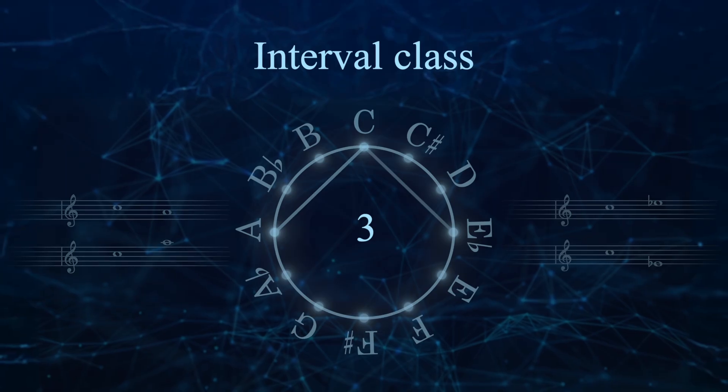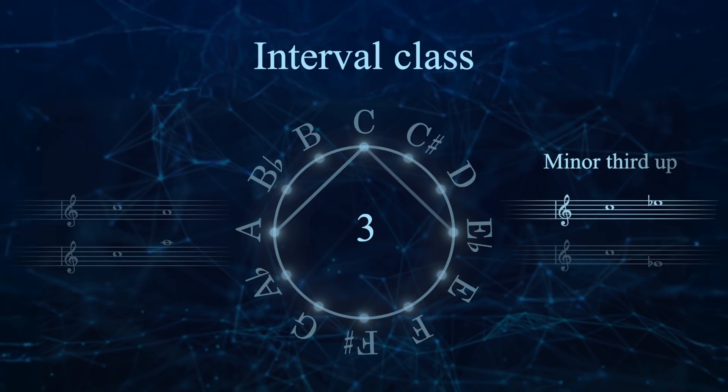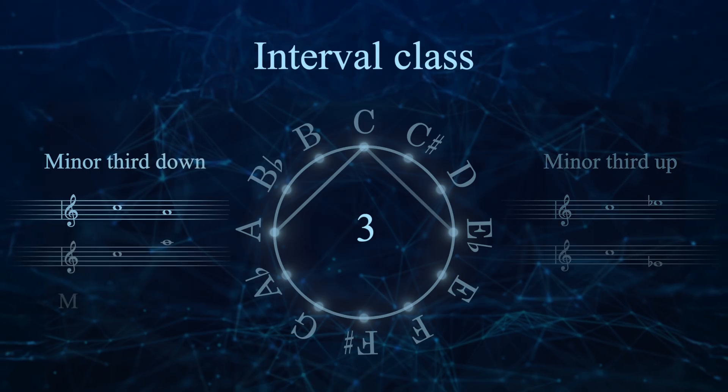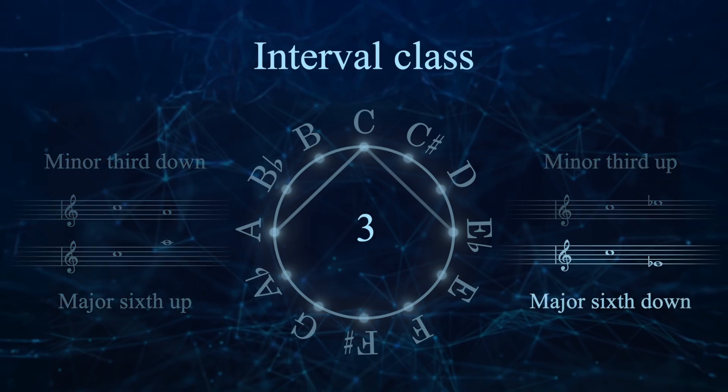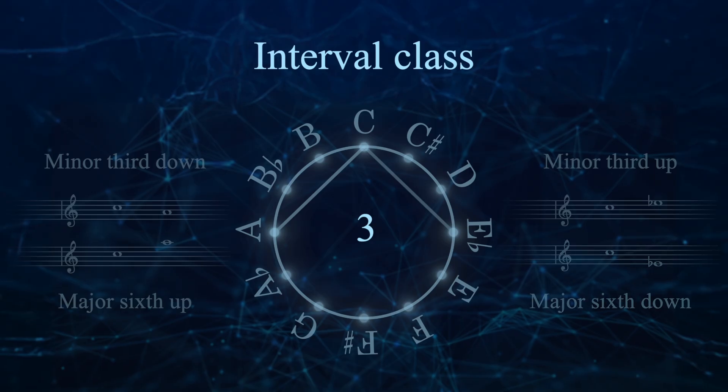In tonal terms, interval class 3 includes an ascending minor 3rd, descending minor 3rd, ascending major 6th, descending major 6th, and any of those with additional octaves added.